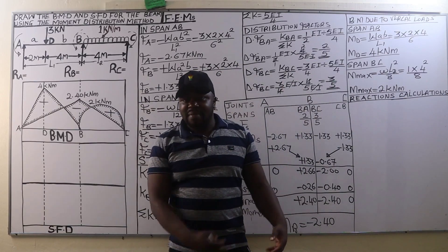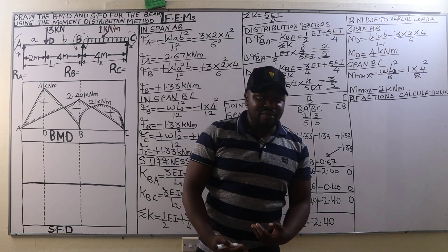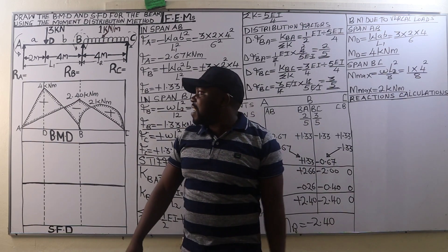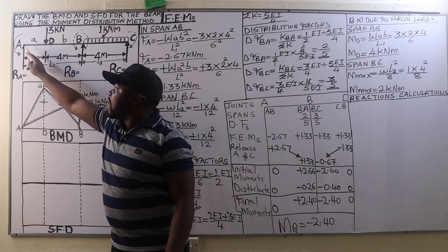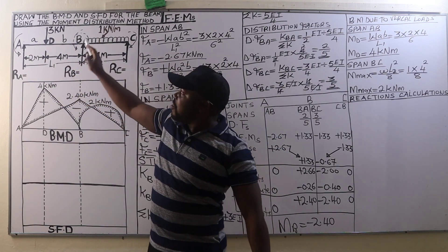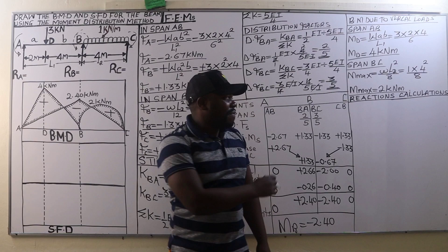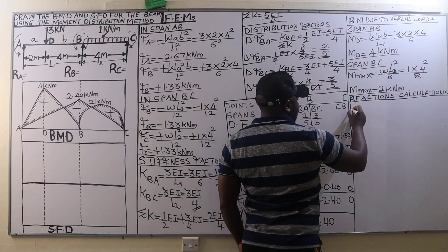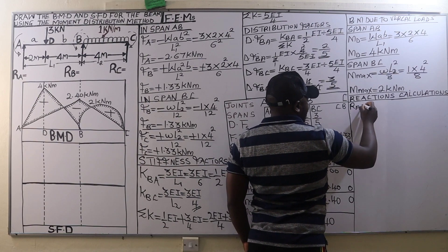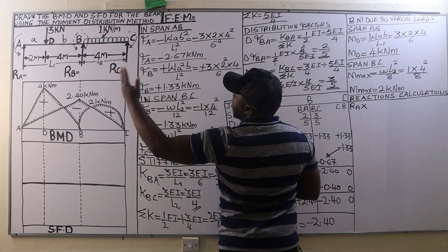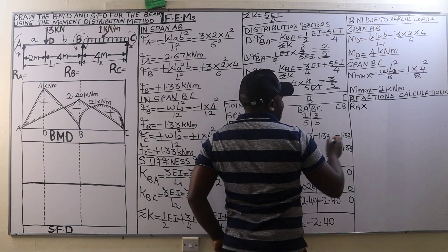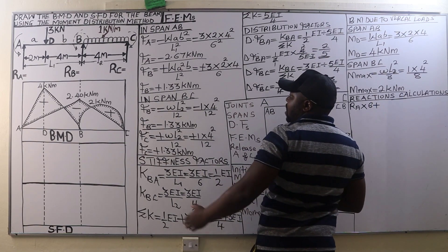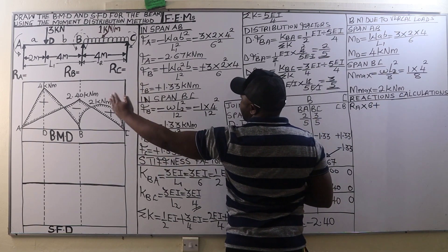After plotting the bending moment diagram, the next thing we are going to calculate is the reactions. We begin with span AB and take moments about B. On span AB, taking moments about B, we have the reaction at A multiplied by the distance from A to B, which is 6 meters — that is a clockwise moment — plus the bending moment at B which is 2.40 kilonewton meters.